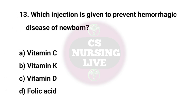Question No. 13. Which injection is given to prevent hemorrhagic disease of the newborn? Right answer is B. Vitamin K.